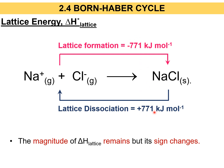The magnitude — the numerical value — of the lattice enthalpy is the same for both formation and dissociation. What changes is only the sign, because one indicates lattice formation where by definition energy must be released (negative), but when we reverse the equation it becomes lattice dissociation, and the negative becomes positive.